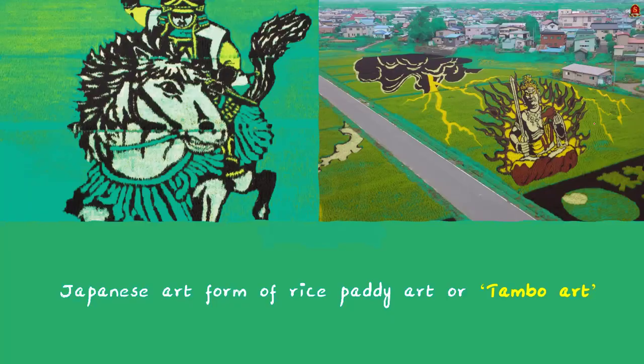Even a few days back, a Wayanad farmer created an Ashoka Chakra using tambo art. In Japanese, rice fields are called 'ta' or 'tambo.' Tambo art uses rice fields as a canvas to create huge design works by planting rice with different colored leaves and grain heads.